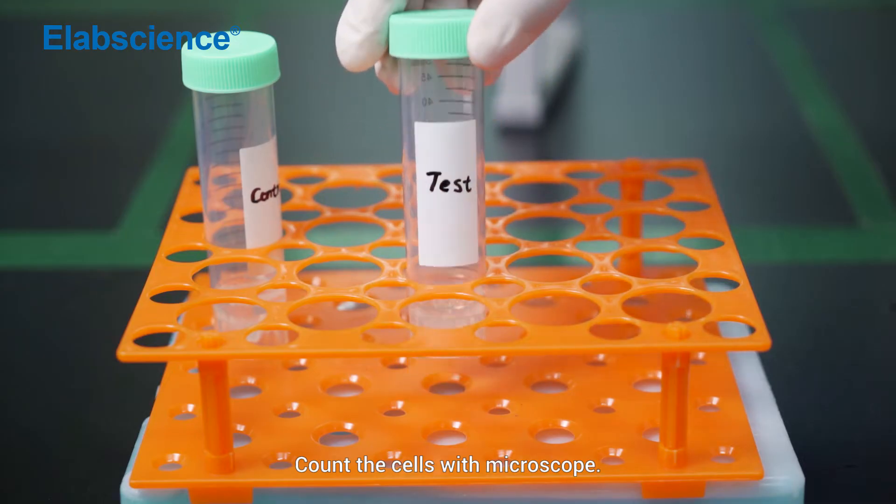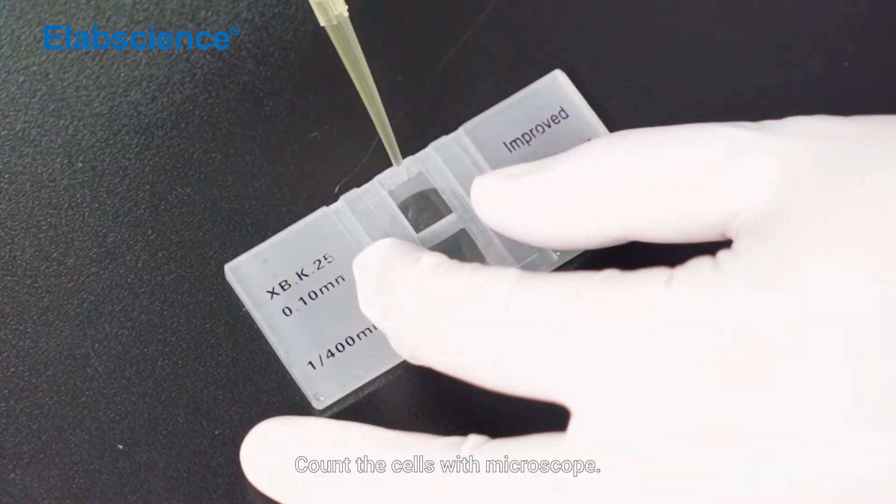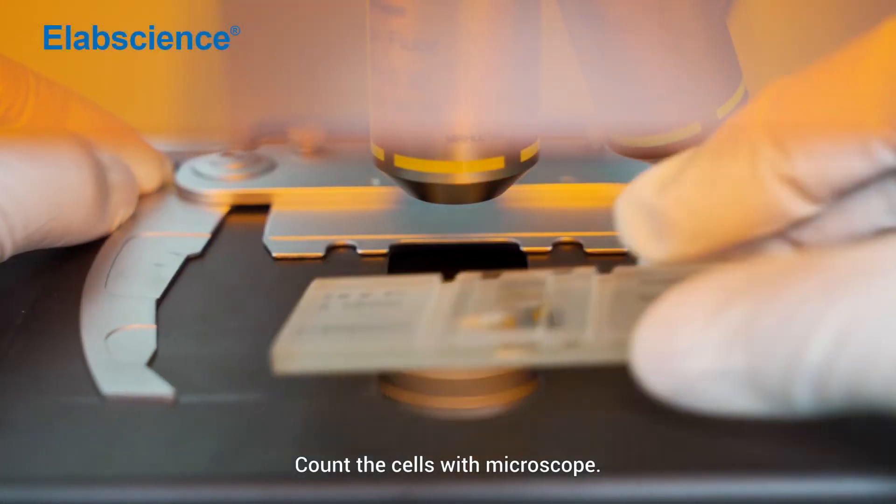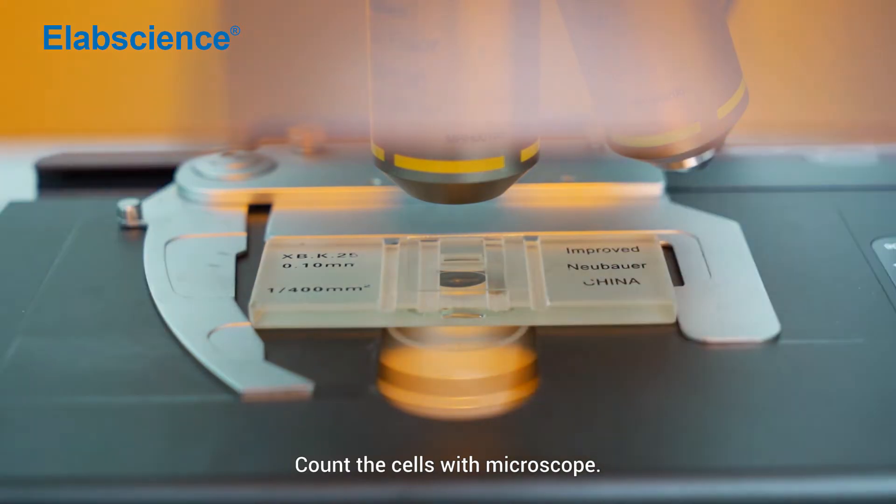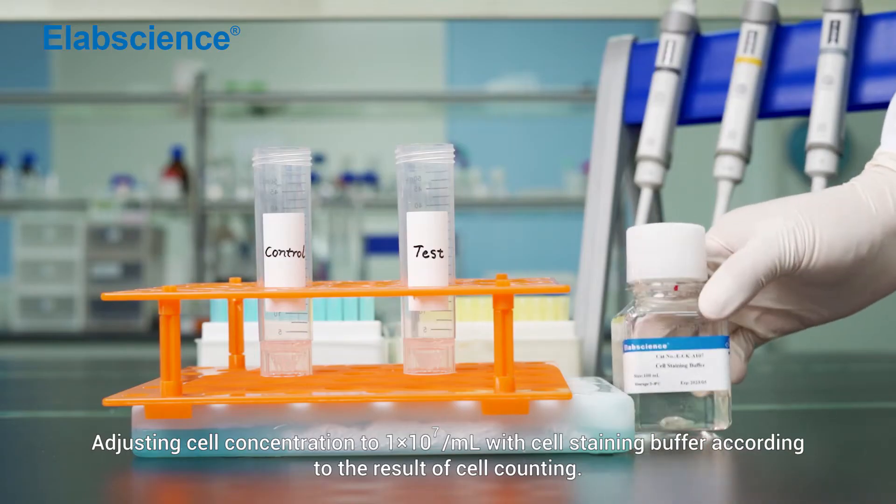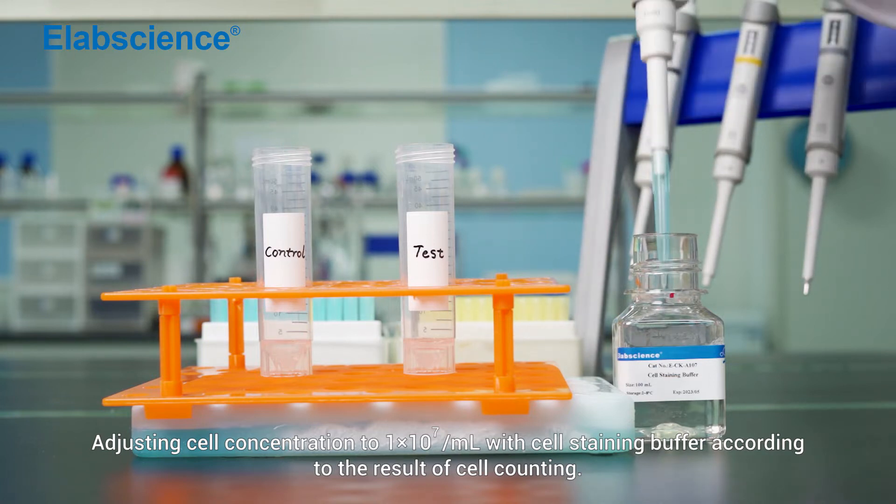Count the cells with microscope. Adjusting cell concentration to 1×10^7 per ml with cell staining buffer according to the result of cell counting.